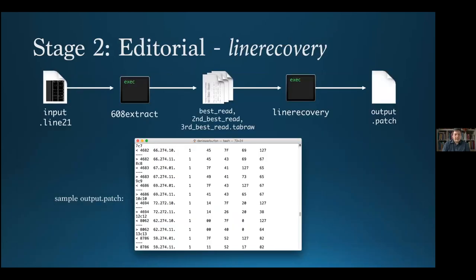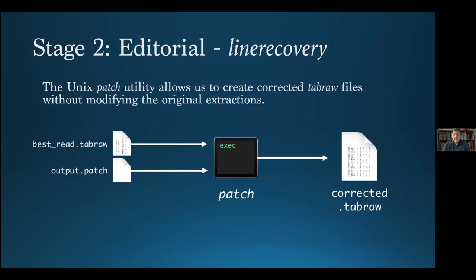The second stage, editorial, deals with the non-destructive editing of Tab Raw files. A good example is the line recovery tool. It determines how many lines have parity failures in the user's best copy, and searches any number of user-supplied additional extraction passes for versions of those lines without parity failures. For each one it finds, it adds a patch into a patch file. That patch file can then be used with the Unix patch utility to generate a new corrected Tab Raw file, while the original extractions are retained untouched.